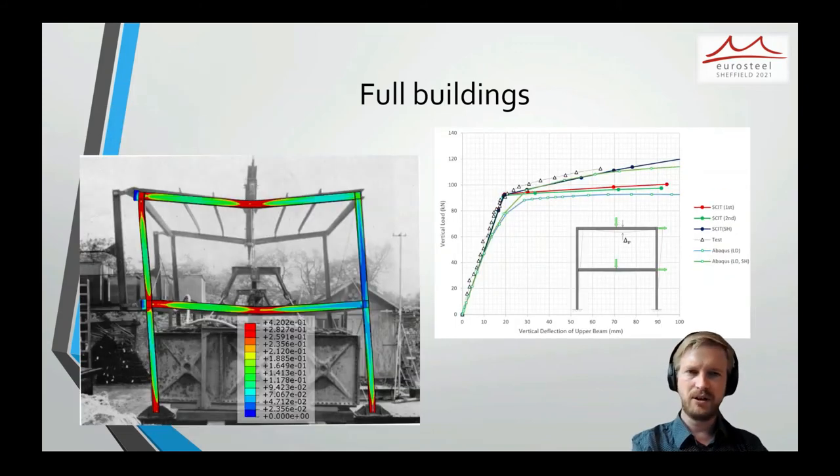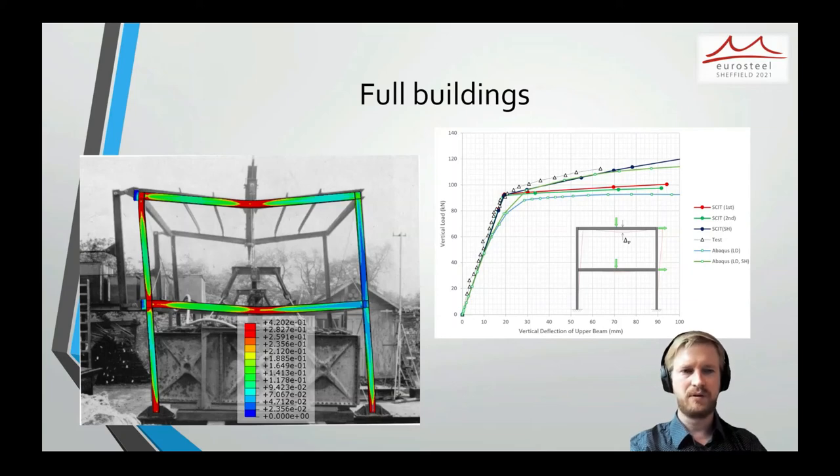This is the second building. And once again, you can see that the FE results with strain hardening and second order effects match the tested results relatively closely. However, when strain hardening isn't included, there's a significant underestimate of the vertical load.